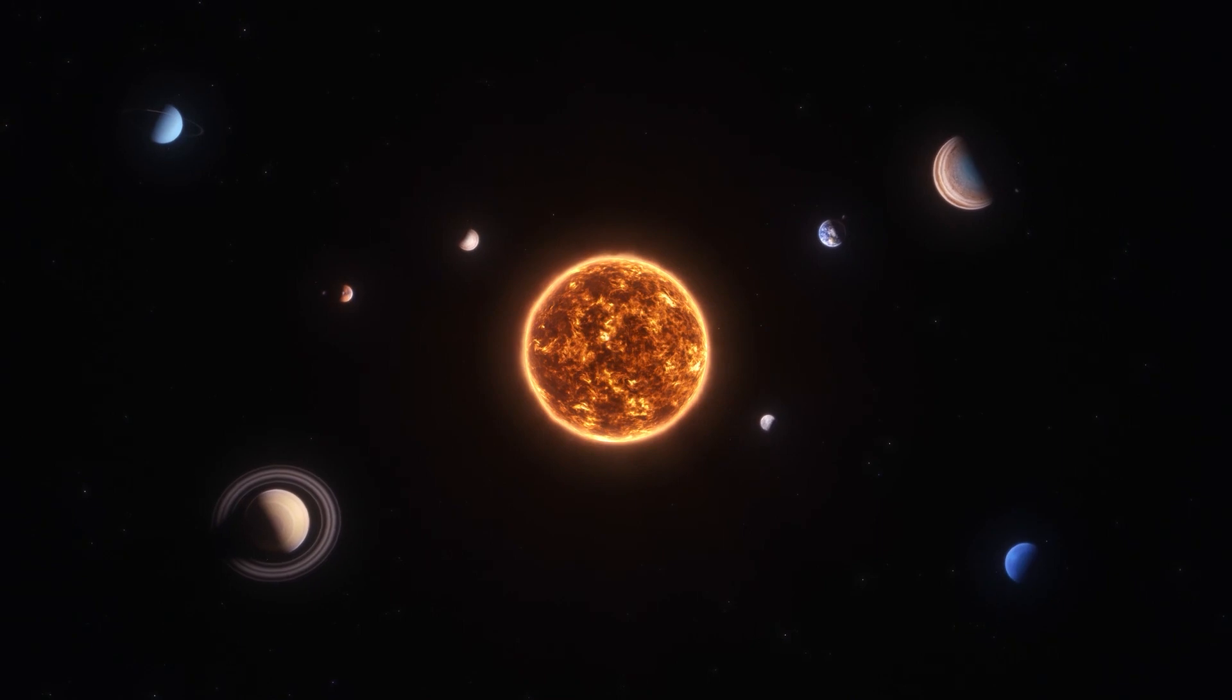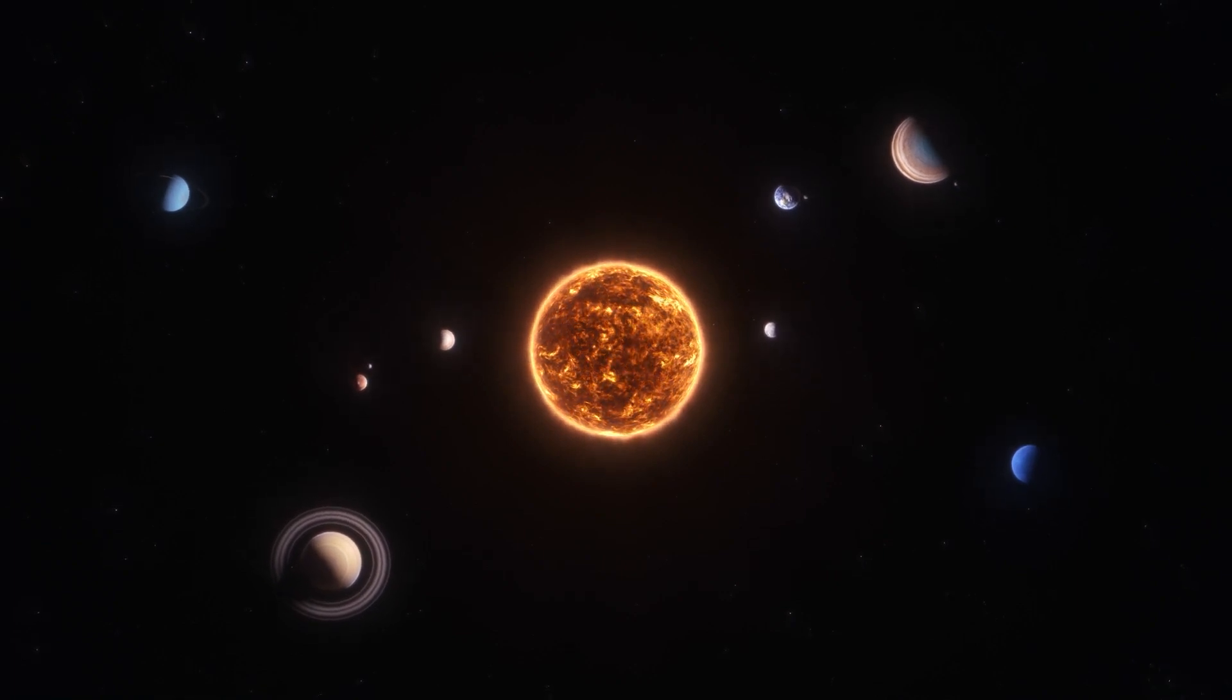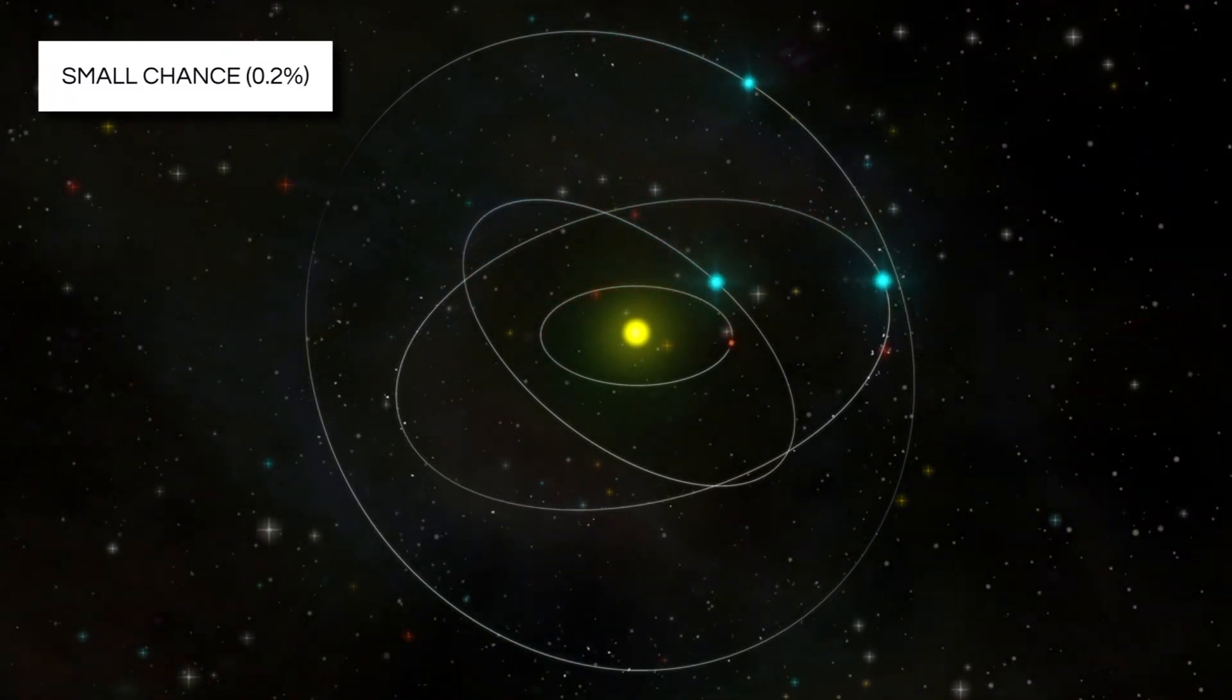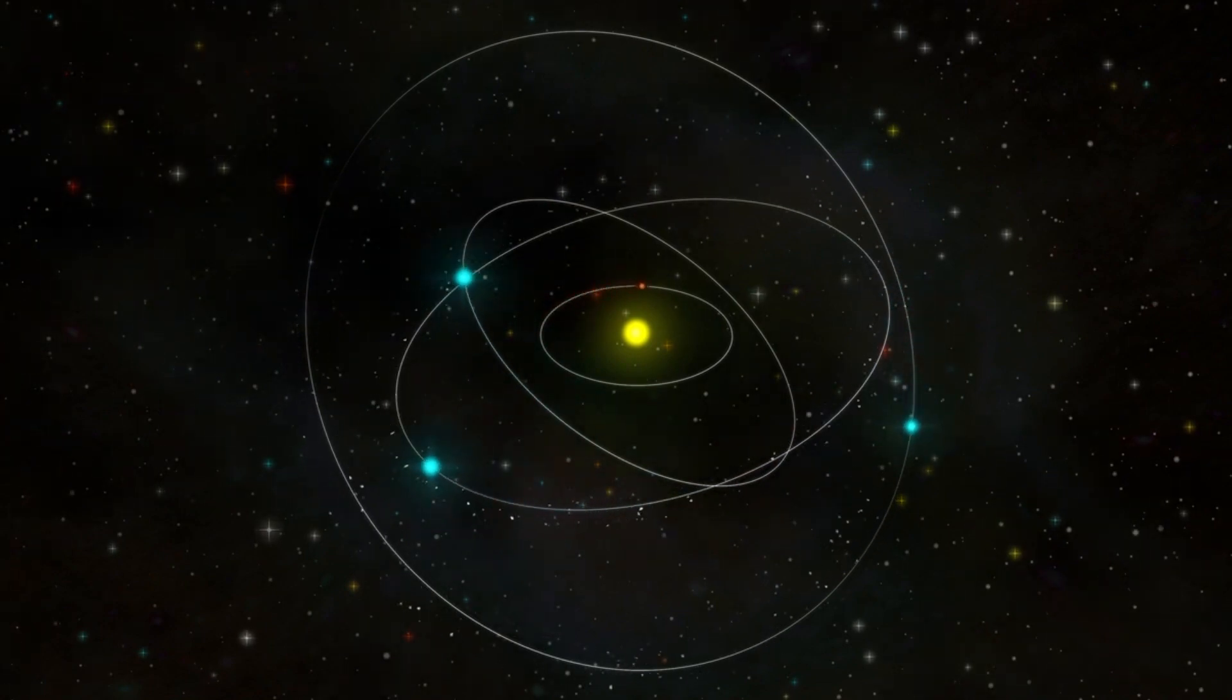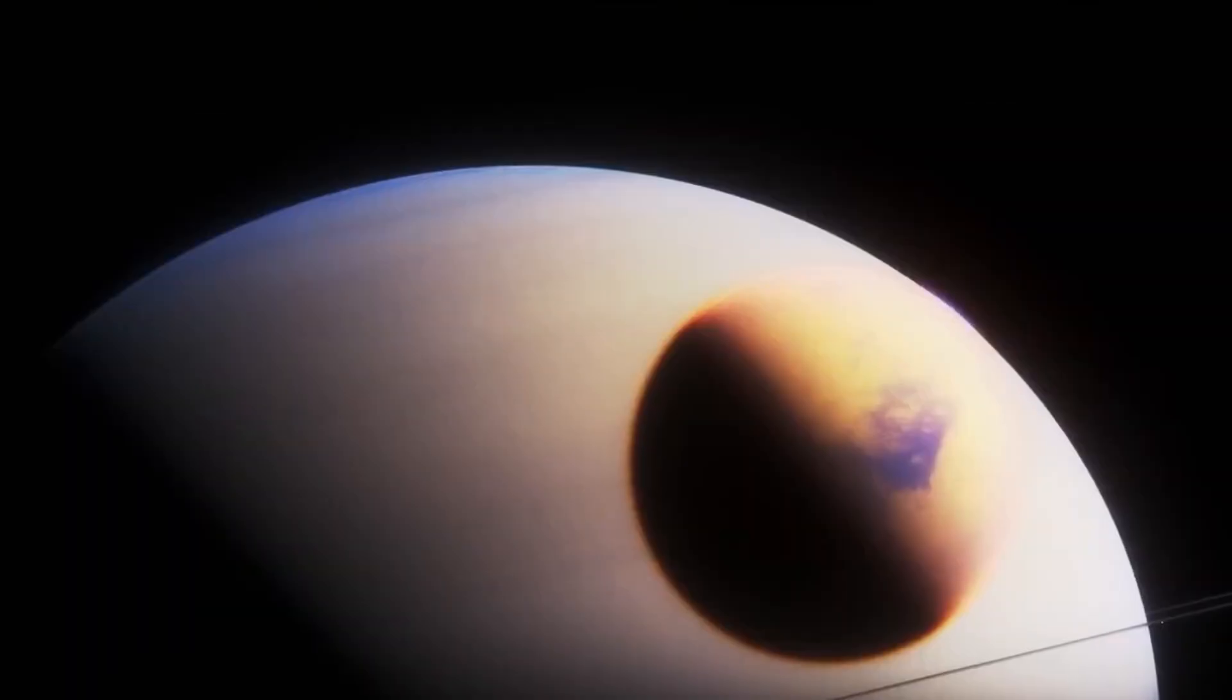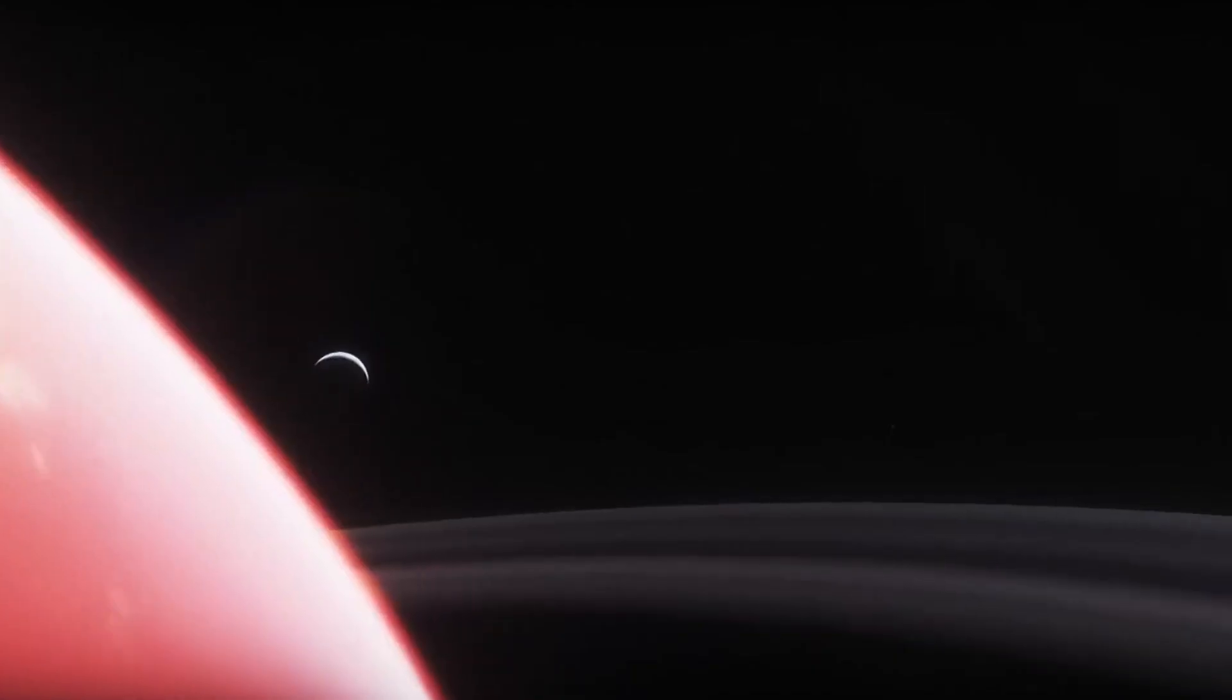Scientists have been trying to figure out if the way certain objects move in our outer solar system is just random, or if there's something more to it. They've looked at lots of data, and found that there's only a very small chance, 0.2%, that these objects' movements are random. This suggests that there's something causing them to cluster together. The main clues they're using is the way some icy objects beyond Neptune move. They gather in groups, which suggests a big planet's gravity is influencing them.